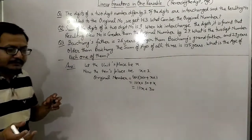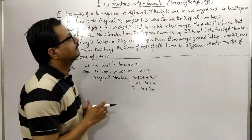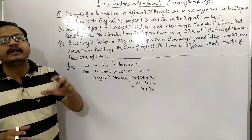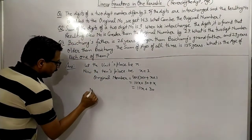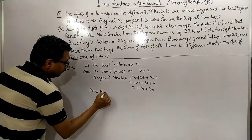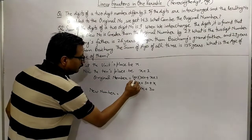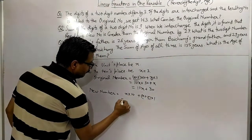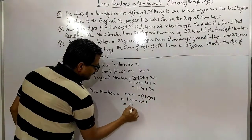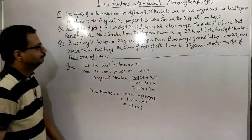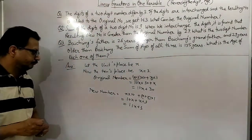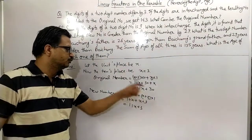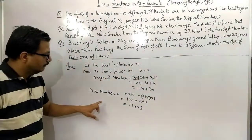Now the question says the digits are reversed. When digits are reversed, the digit at the units place goes to the tens place and the digit at the tens place comes to the units place. So the new number after reversing: the tens digit (x+3) is now at units place (multiplied by 1) and the units digit (x) goes to tens place (multiplied by 10). The new number becomes: (x+3)×1 + x×10 = x + 3 + 10x = 11x + 3.